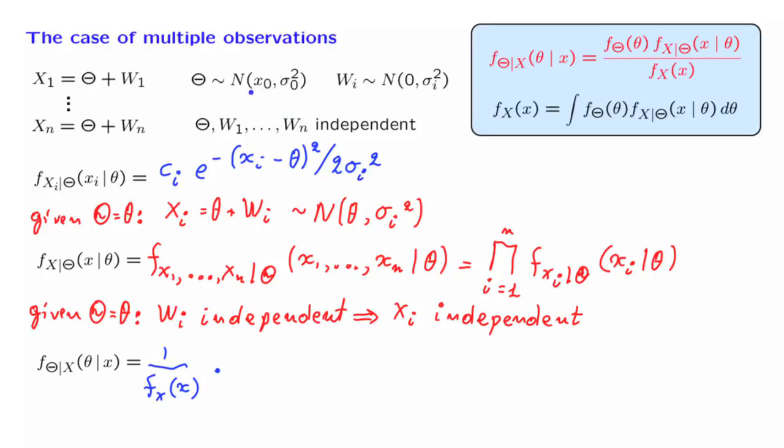Then we have the marginal PDF of theta. Now, since theta is normal with these parameters, this is of the form e to the minus theta minus x0 squared over 2 sigma 0 squared. And then we have this joint density of the x's conditioned on theta, which we have already found.